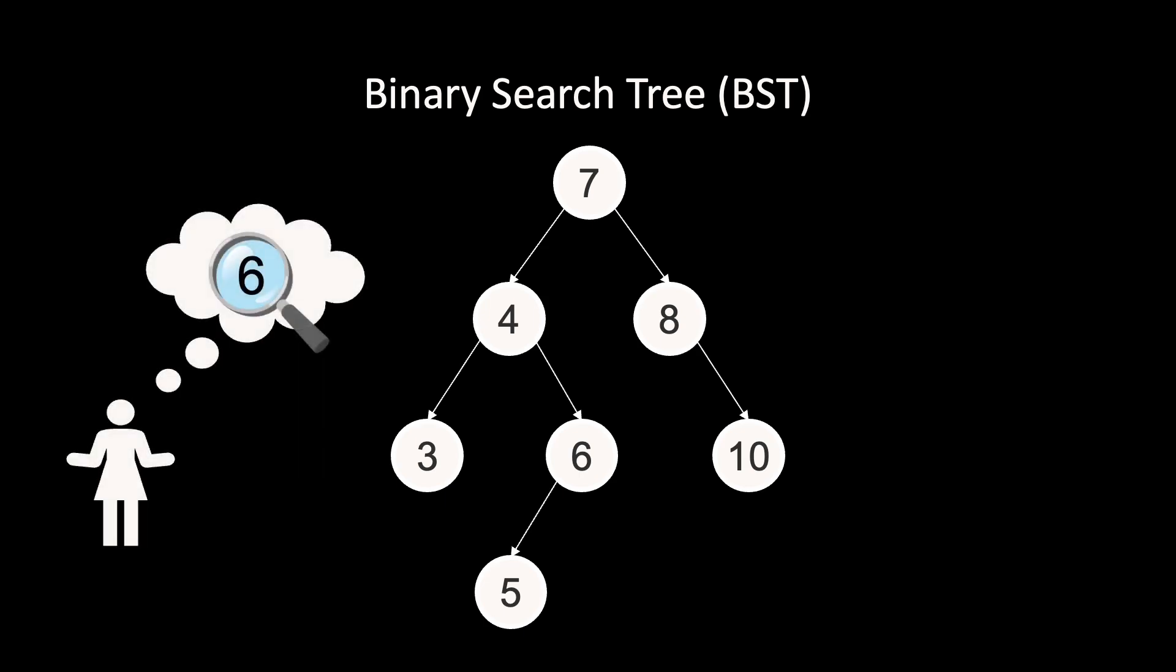Let's say you want to find the item with key 6 in this search tree. We always start at the top of the tree, which is the so-called root. This tree is organized as follows: every node in the tree is a key.